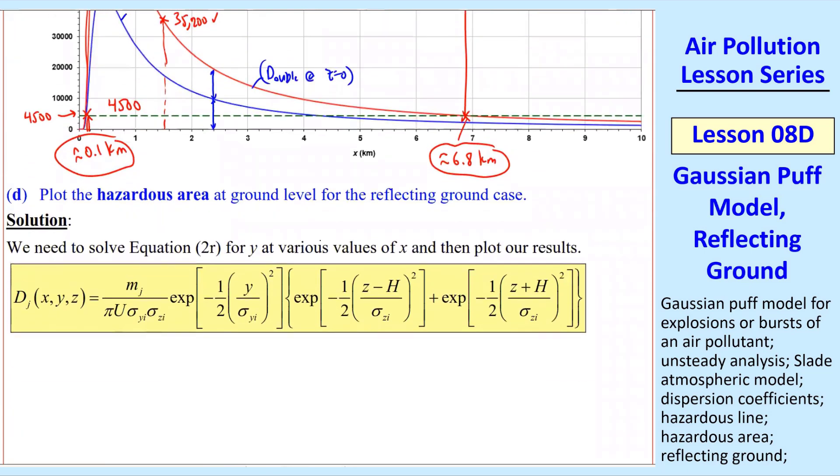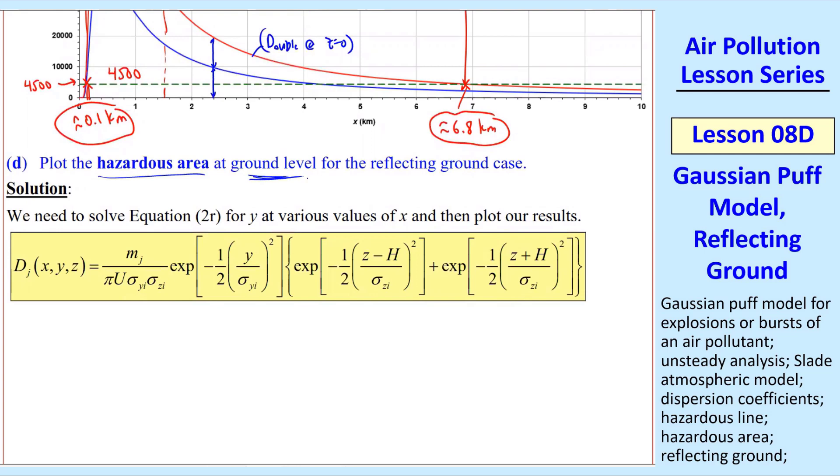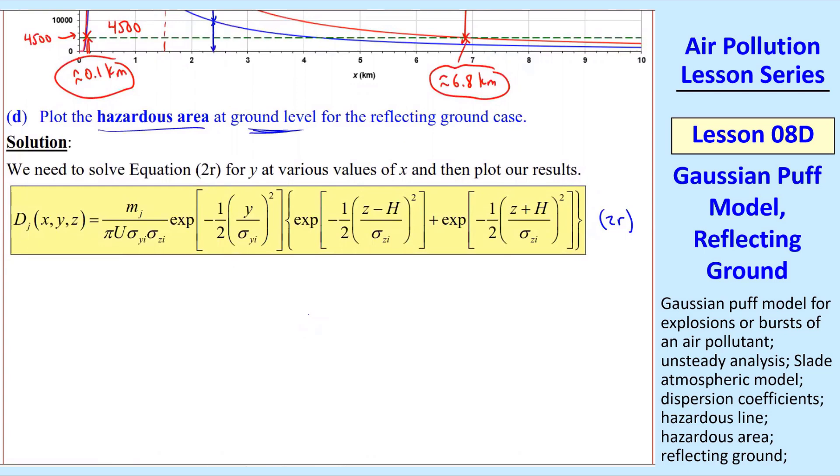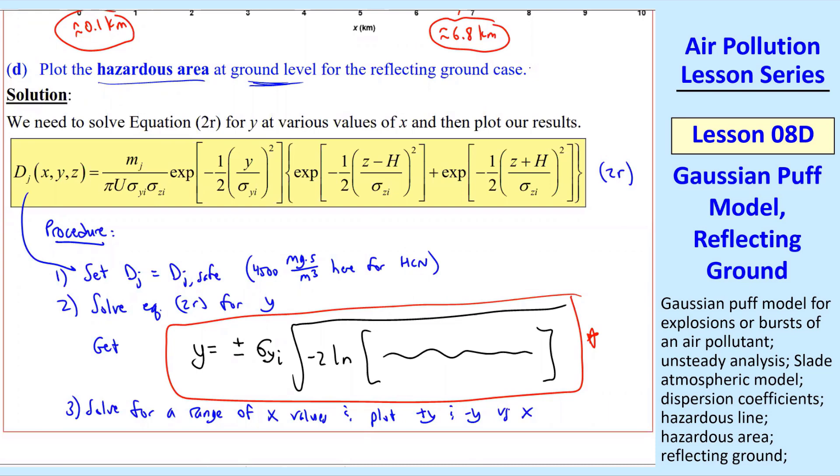Part D, let's plot the hazardous area at ground level. You should have the same equation in Excel or MATLAB for all your problems, just change some numbers. How do we solve this to get the hazardous area? The procedure is to set DJ equal DJ safe, which is 4,500 milligrams second per meter cube for HCN. Solve equation 2R for Y. You get Y equal plus or minus sigma YI times square root of negative 2 natural log of a bunch of stuff. It's very simple algebra. Then you solve for a range of X, get plus Y and minus Y, and plot those as a function of X. That will be our hazardous area.